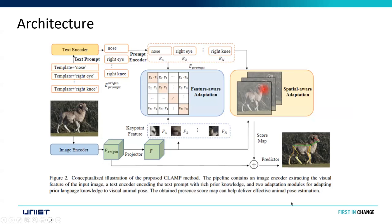This is the architecture — I'll go through it briefly now and in more depth later. There are two components like CLIP: a text encoder and an image encoder. They create something called feature-aware adaptation and spatial-aware adaptation for pose estimation, built on top of the original CLIP, and using these two they finally produce pose estimation.